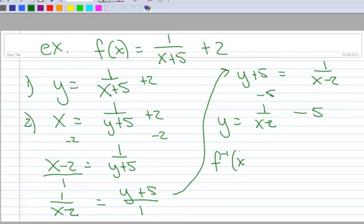Equals 1 over x minus 2 minus 5, and that is our inverse, and I'll leave the check of that up to you. That's the end of this video.